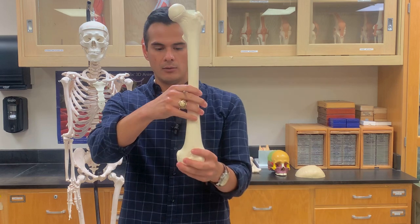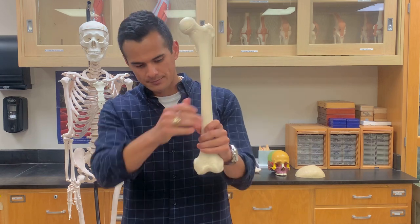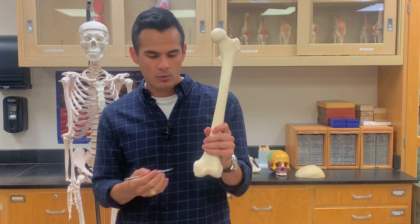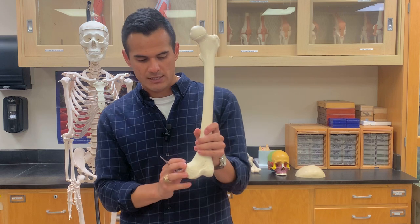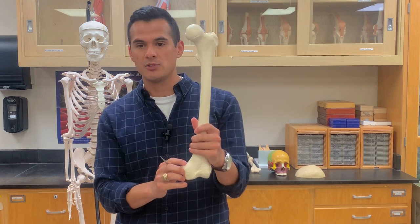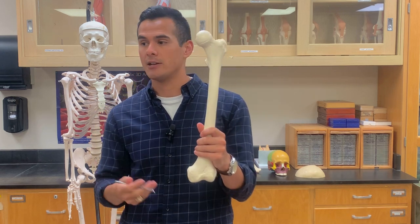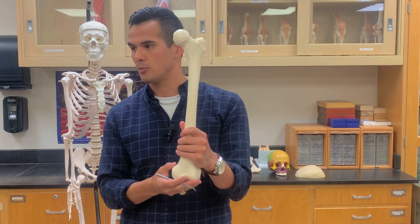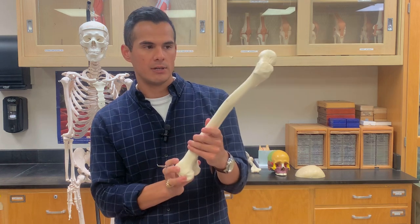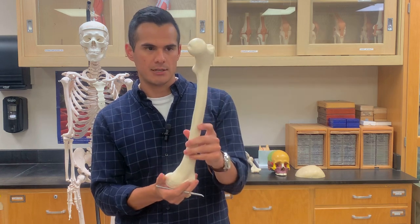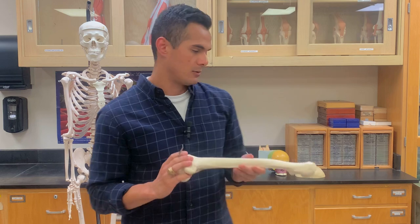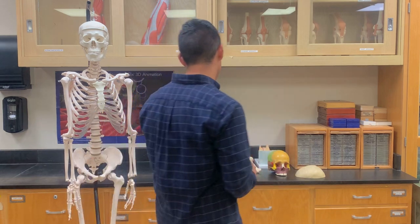We also have what's known as tubercles. One example is the adductor tubercle, which is on the medial side — one of the adductor muscles attaches there. That's it for the femur markings.